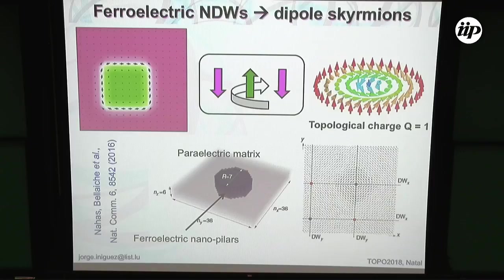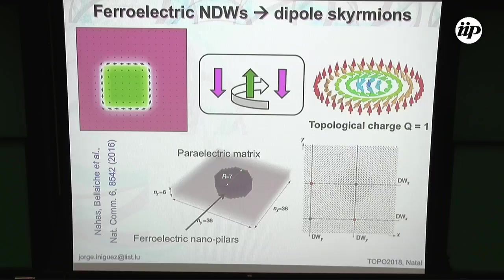We are not the first ones to propose something like this. In related work, the group of Laurent Bellaiche two years ago proposed this: a matrix of a paraelectric strontium titanate with a column of ferroelectric barium titanate. In this geometry, because of the electrostatic boundary conditions imposed on the ferroelectric — very much related to what Marcelo was just showing — you get an in-plane polarization that looks like that, and also a polarization out of plane, giving something that topologically looks like a skyrmion.